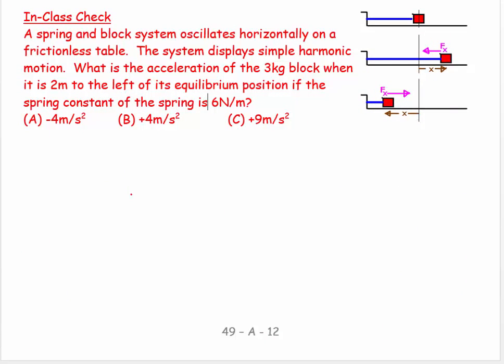So mathematically, numerically, if you like. We can say a spring and block system oscillates horizontally on a frictionless table. The system displays simple harmonic motion. What is the acceleration of the 3 kilogram block? So let's try it. So we have the table. And we have the 3 kilogram block. And the 3 kilogram block is, oh, I see. It's 2 meters. 2 meters to the left of its equilibrium position. And the spring constant, K, is equal to 6 newtons per meter.